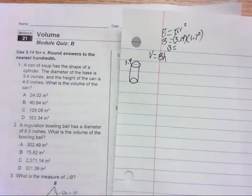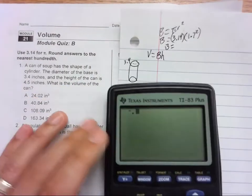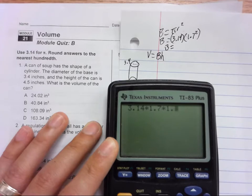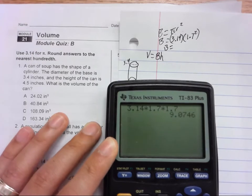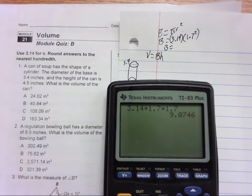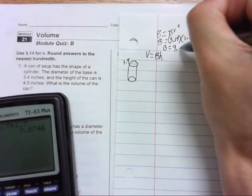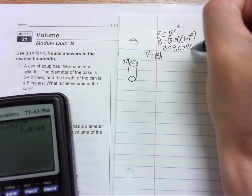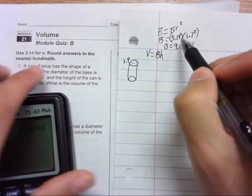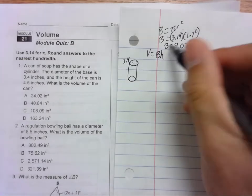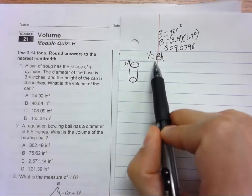So the area of the base is, and you have to do 3.14 times 1.7, and I would just do times 1.7 again, you get 9.0746. We're going to keep that whole thing. We're not going to round unless we have to at the end. So this is the area of the base.